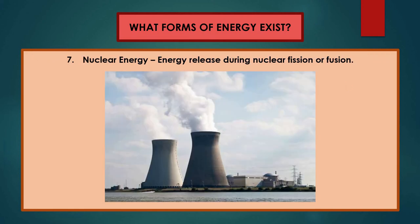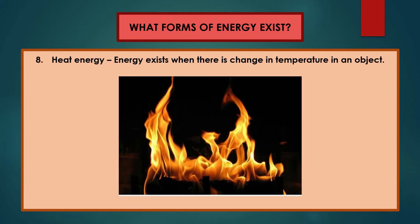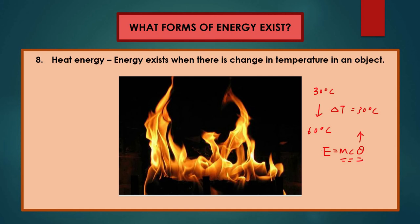Nuclear energy is an energy released during nuclear fission or nuclear fusion — you will learn more details in Physics SPM. Heat energy exists when there is a change in temperature. For example, if temperature changes from 30°C to 60°C, the change is 30°C. From the formula Q = mcΔθ, where m is mass, c is specific heat capacity, and Δθ is the change in temperature — the higher the change in temperature, the higher the heat energy.